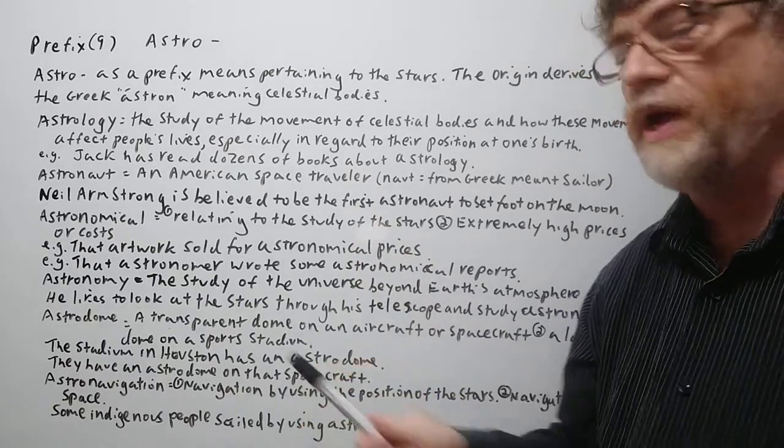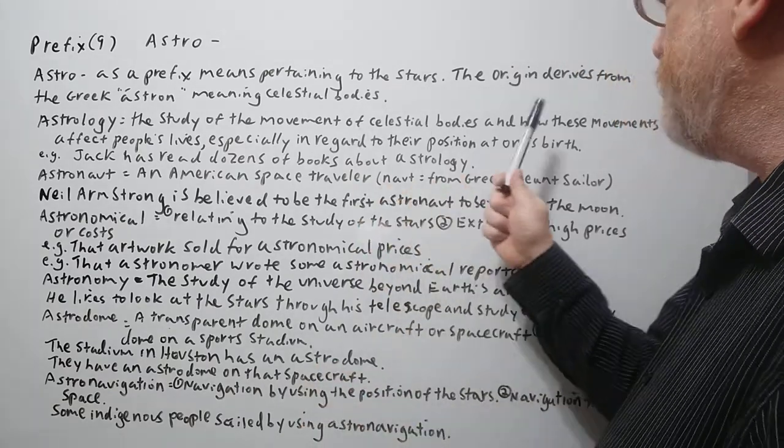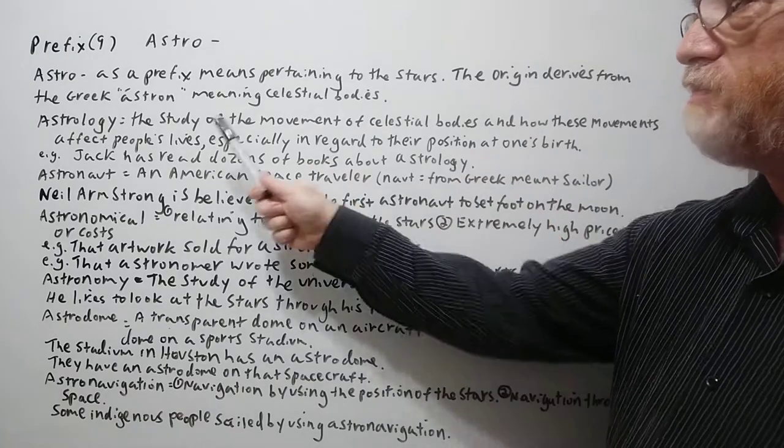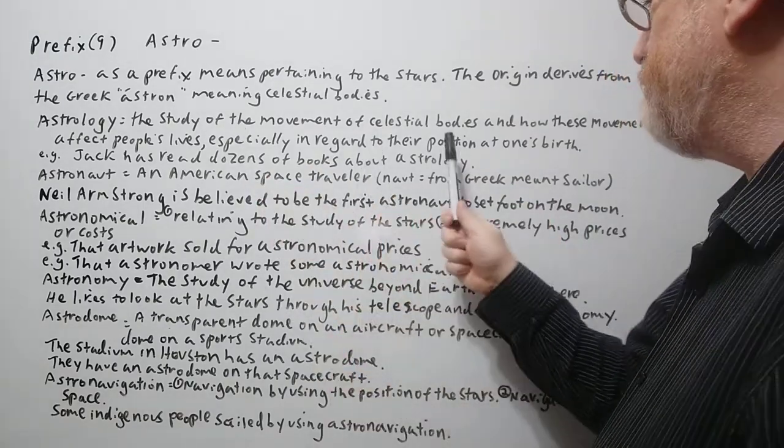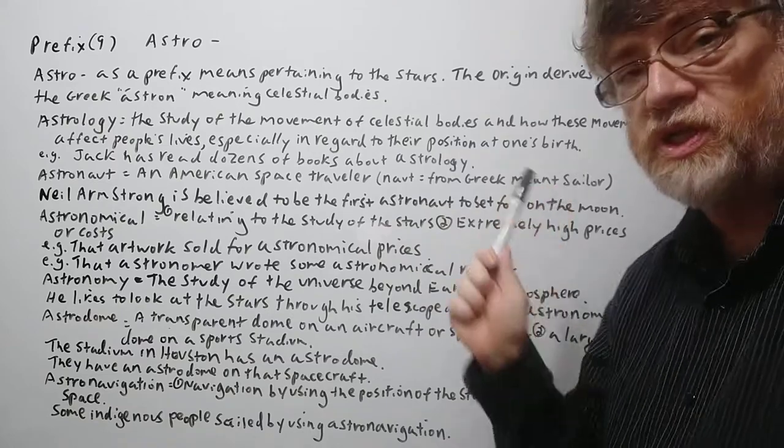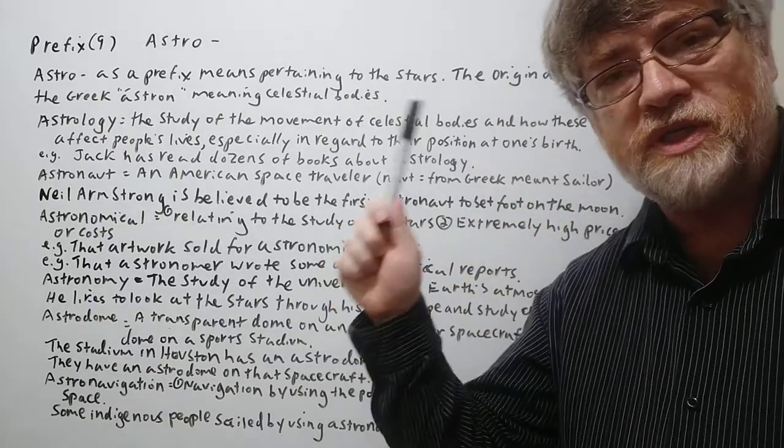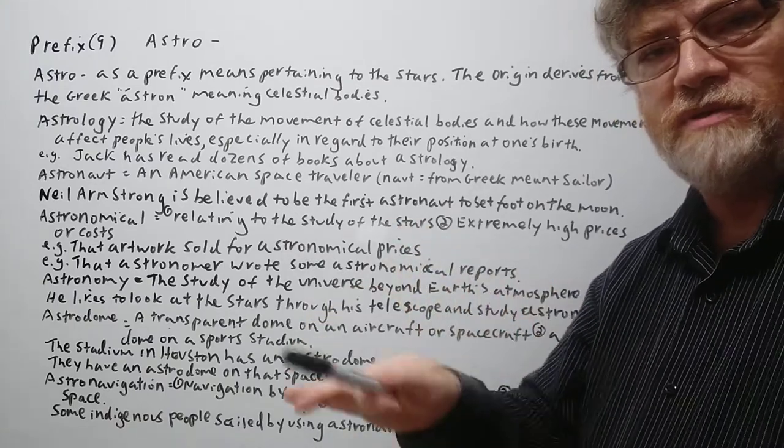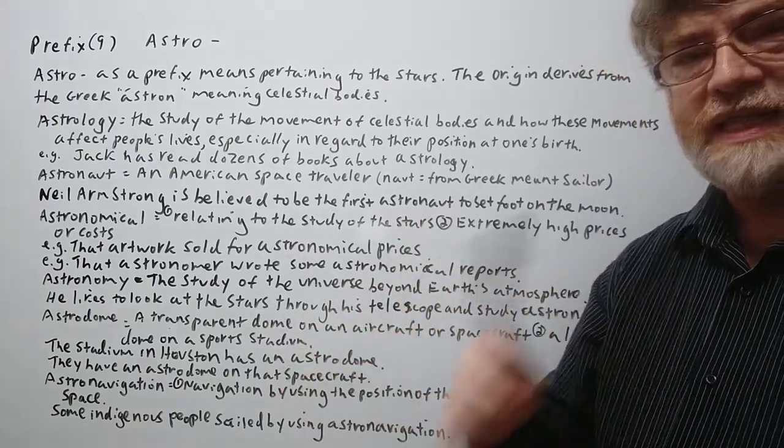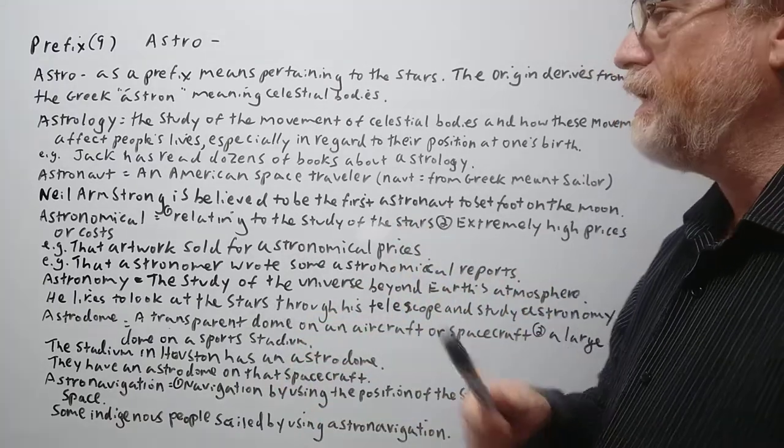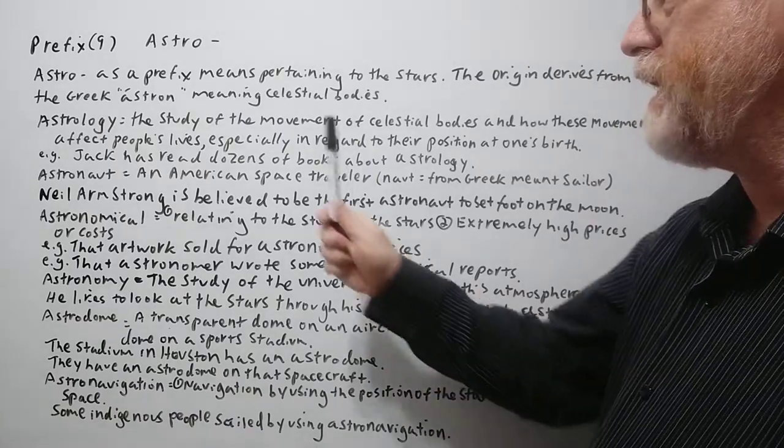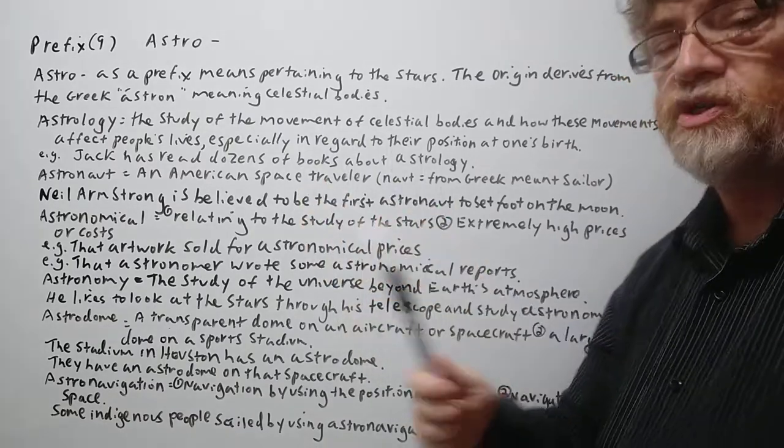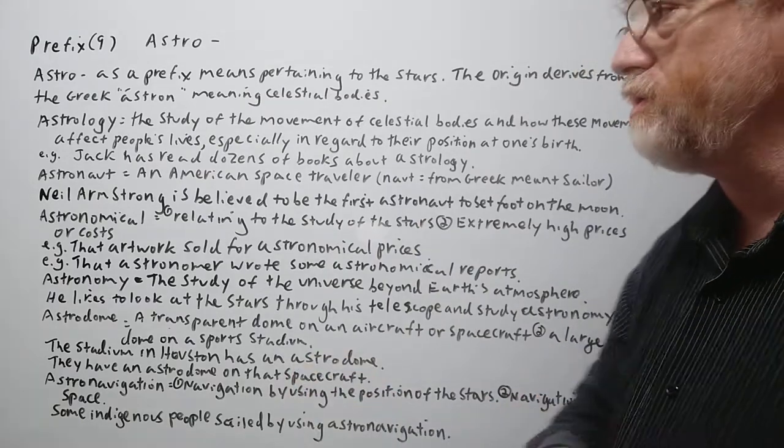Astrology. Of course this is quite common. The study of the movement of celestial bodies and how these movements affect people's lives, especially in regards to their position at one's birth. But even their positions later are supposed to affect whether your luck or whether something may happen in your life. That's the idea behind it. So Jack has read dozens of books about astrology.